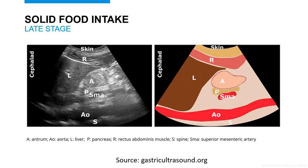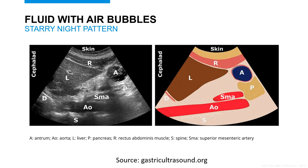Here we can verify we are at the antrum because we see the pancreas, SMA, and the aorta. Here we see an antrum with only clear liquid. We appreciate this with what we call the starry starry night pattern, named after Vincent van Gogh's painting. The antrum is distended with clear liquid, which appears dark or hypoechoic on ultrasound. The speckled white hyperechoic dots are air bubbles.